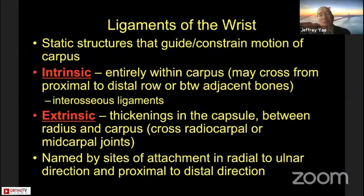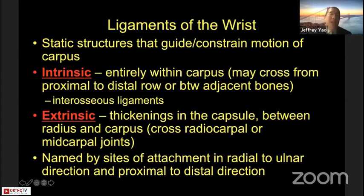I'll be talking about perilunate injuries, and it's always relevant to refresh the anatomy. Ligaments of the wrist are static structures that guide and constrain motion of the carpus. In the wrist, we break them down into intrinsic ligaments — entirely within the carpus such as the interosseous ligaments — or extrinsic ligaments, which cross the radial carpal joint or the mid-carpal joint.